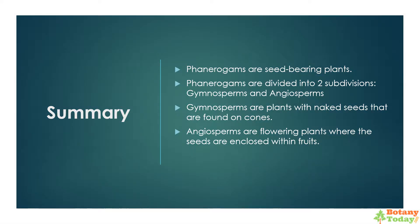Let's look at what we have learned today. We learned that Phanerogams are seed-bearing plants, divided into two subdivisions: gymnosperms and angiosperms. Gymnosperms are plants with naked seeds that are found on cones. Angiosperms are flowering plants where the seeds are enclosed within fruits.